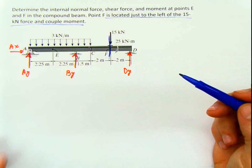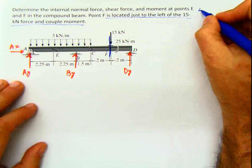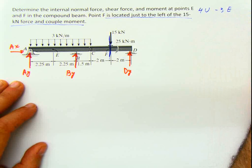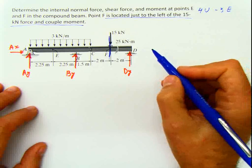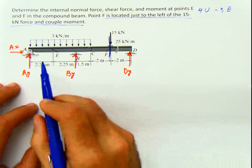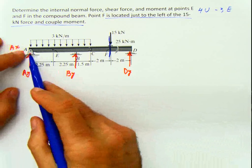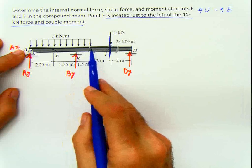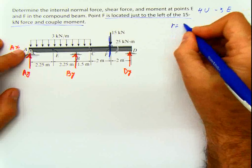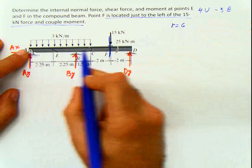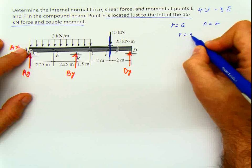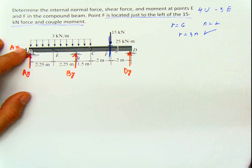But that's not statically indeterminate. Even with four unknowns and three equations, if we apply the method for indeterminacy: we have 2 plus 1 equals 3, plus 2 in this hinge equals 5, plus 1 in this roller equals 6. So r equals 6. And n, the number of elements, is 2. Since r equals 3n, this is statically determinate.